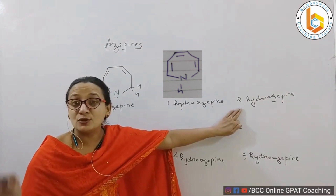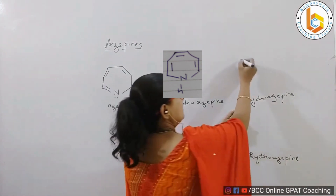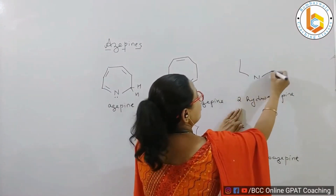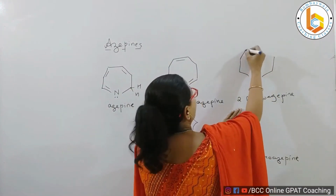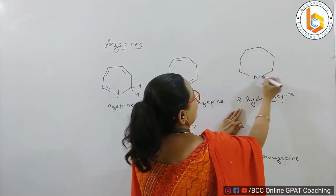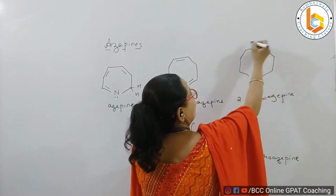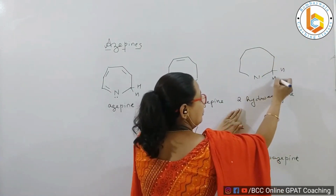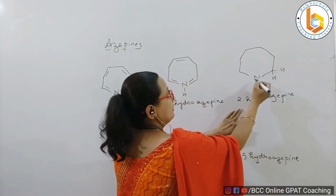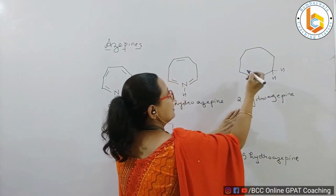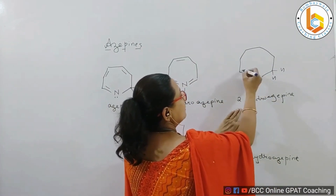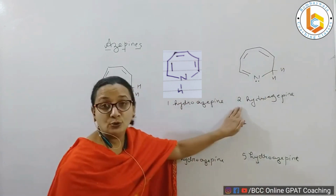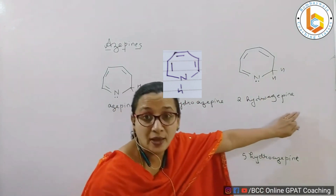If I want to make the structure of 2-hydroazepine, it is again a seven-membered ring with positions one through seven. The hydrogen is at position two — nitrogen lies at position one outside the direct double-bond system, with positions one, two, and three shown. This is called 2-hydroazepine.